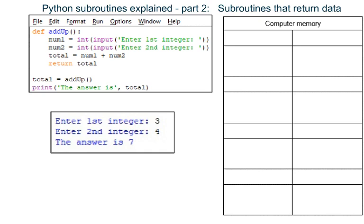This program is now over. Remember, variables made inside the subroutine are called local variables. In this program the subroutine creates three local variables. Local variables only exist whilst the code inside the subroutine is being run. As soon as Python reaches the end of a subroutine the local variables in it are destroyed. Therefore, if we want to use data from local variables elsewhere in our program, we need to return that data at the end of the subroutine before the local variables are destroyed.